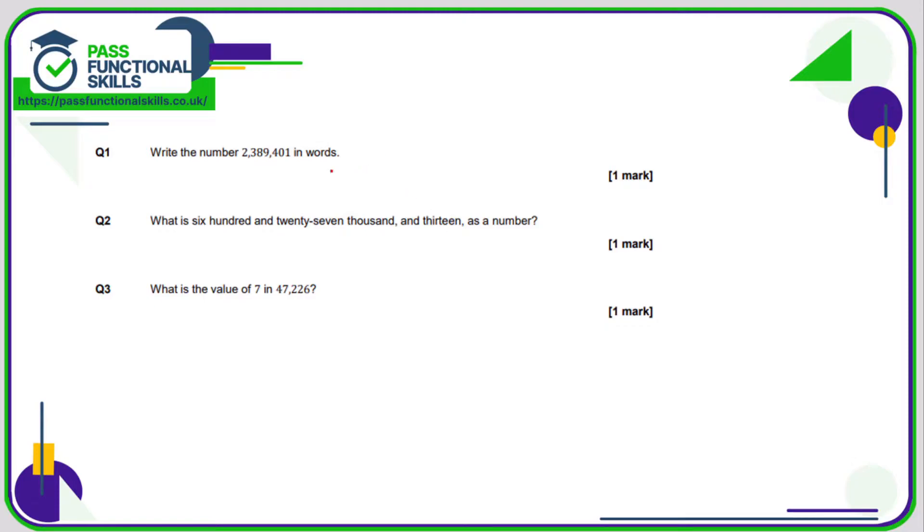So question number one, we need to write this number in words. Now we group numbers in blocks of three going from right to left, and after every three we can put in a comma or a gap. That first comma here represents the word thousand.